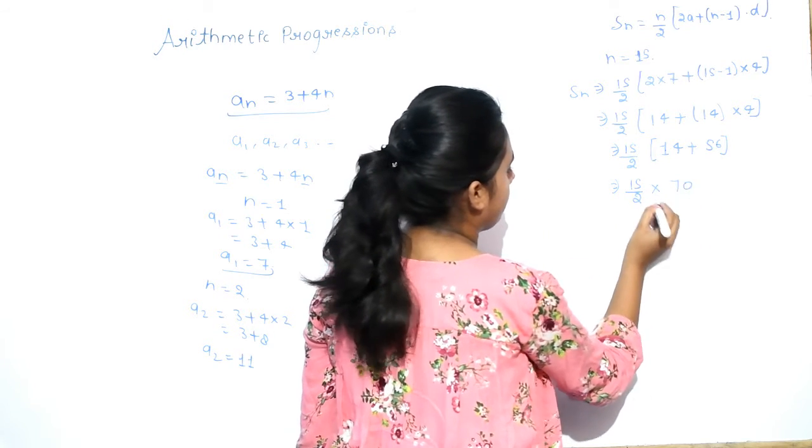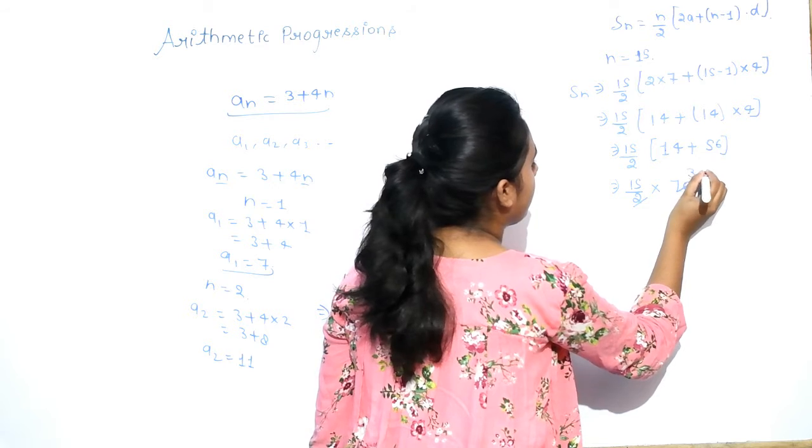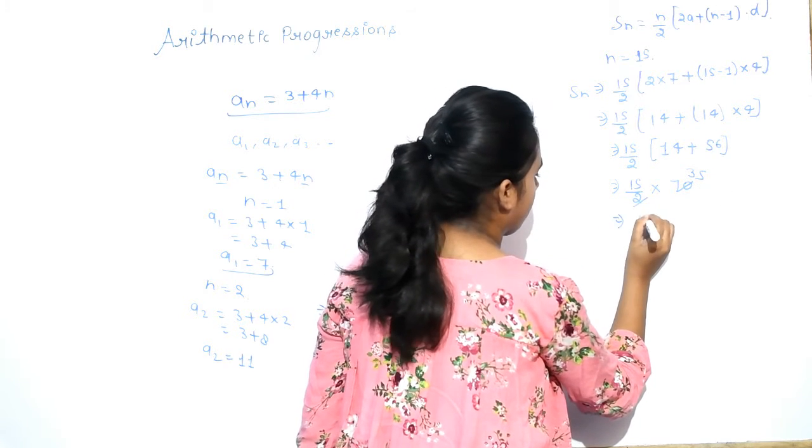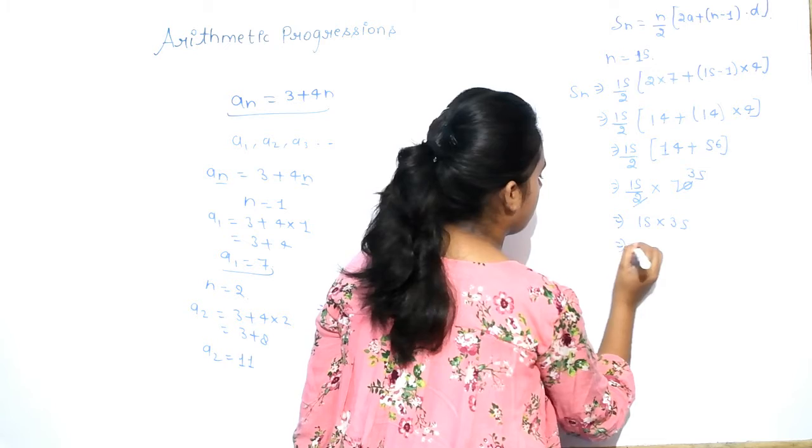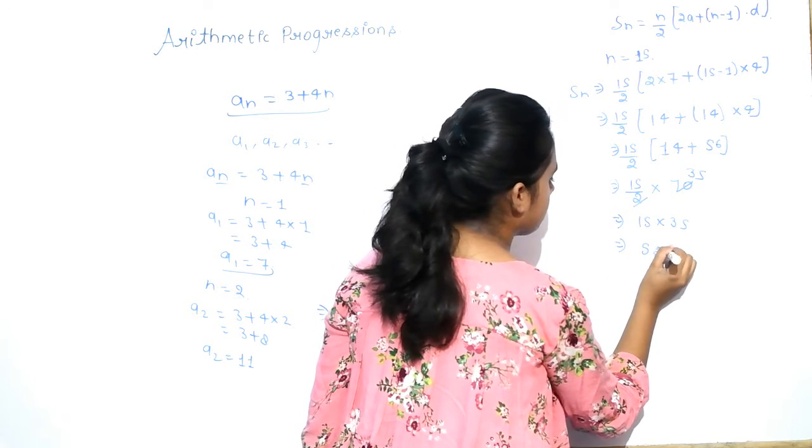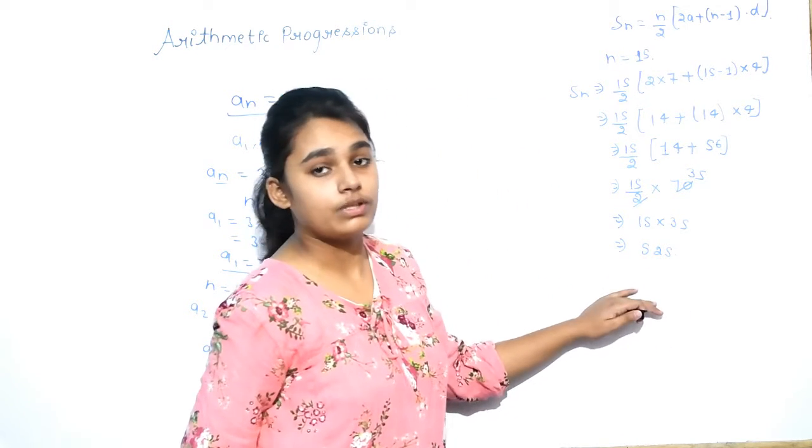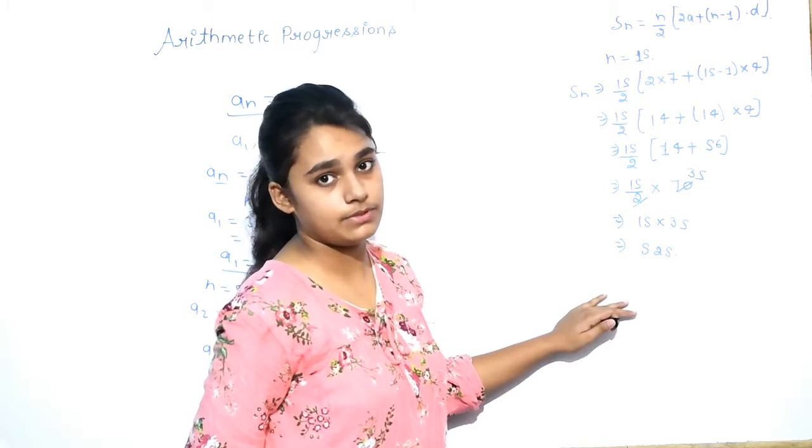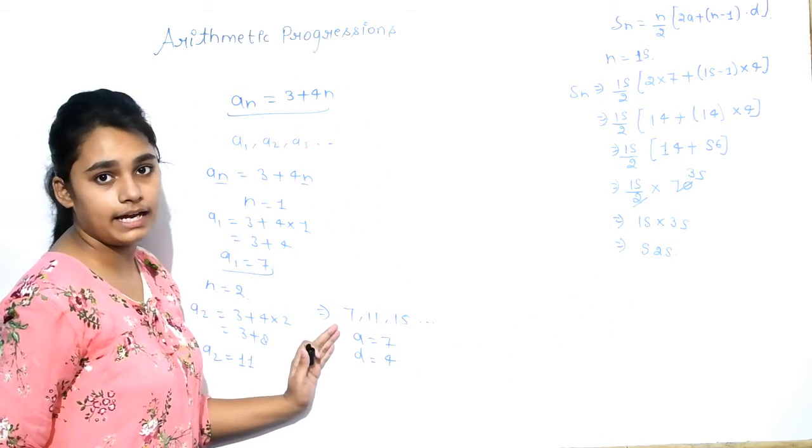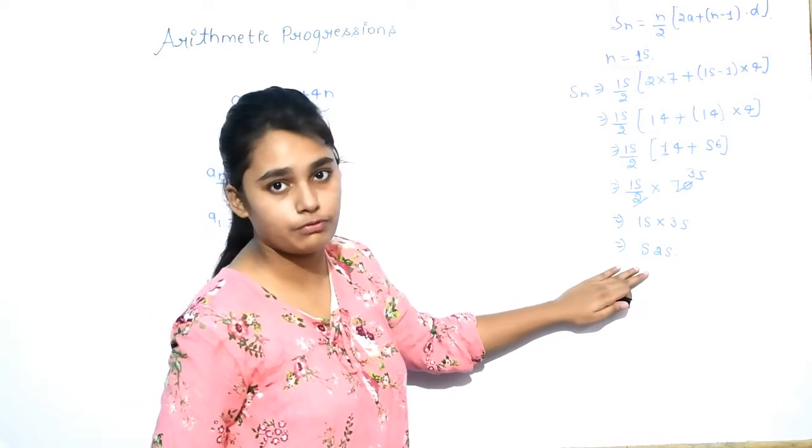Now there is 70. Now it will reduce, so we get 15 into 35. That is 525. So the sum of first 15 terms of the AP that we are getting here is 525.